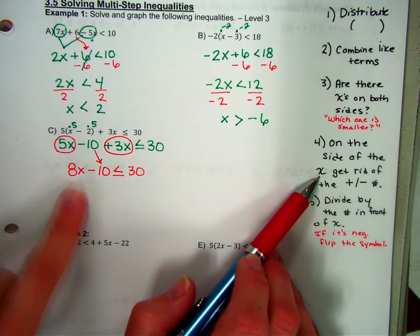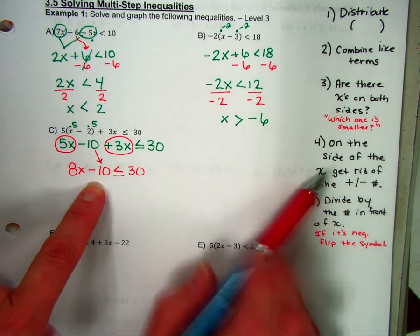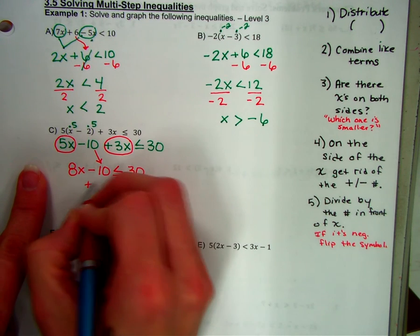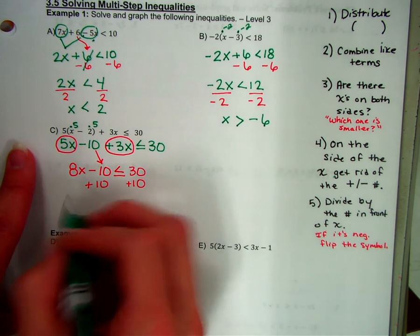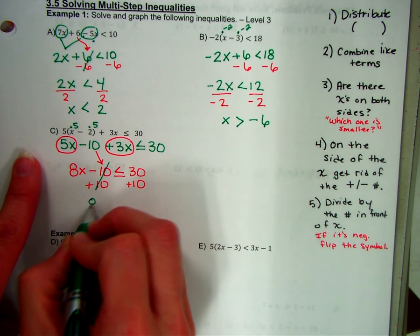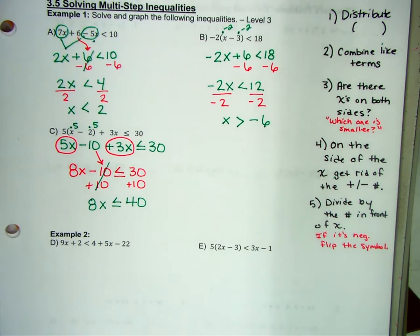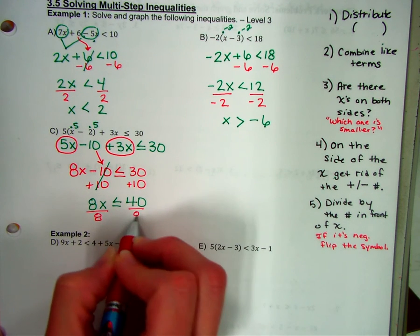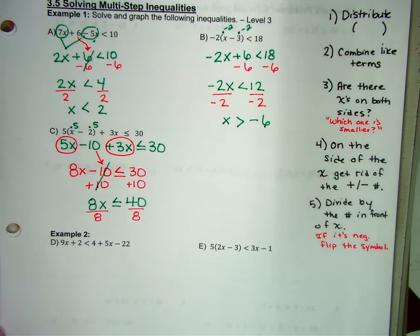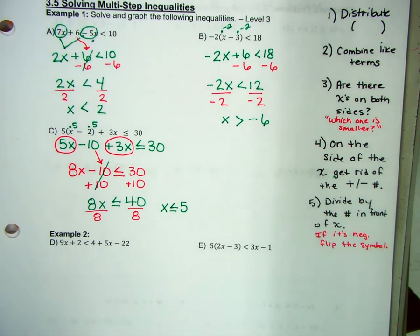Okay. Next one down, step four says on the side of the x. So the x is over here. Get rid of the plus minus number. So instead of minus 10, we're going to do plus 10 to both sides. So 8x less than or equal to 40. Divide by 8. Divide by 8. And x is less than or equal to 5. Okay. That's the process.